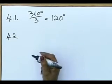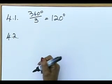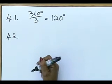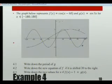4.2, write down the new equation of f if it is shifted 30 degrees to the right. The graph of f, that's him on the screen, that's him. I am moving him 30 degrees to the right. And if I move him another 30 degrees to the right he should start at 90 degrees. Obviously he must start at 90.